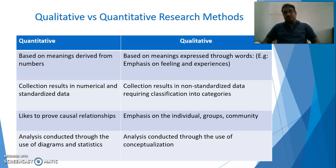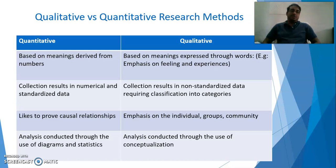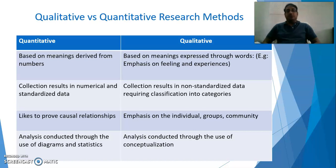Let's look at the basic differences between qualitative research methods and quantitative research methods. Quantitative research methods is derived from numbers — that means quantitative deals with numbers. While qualitative research methods means expressed through words.